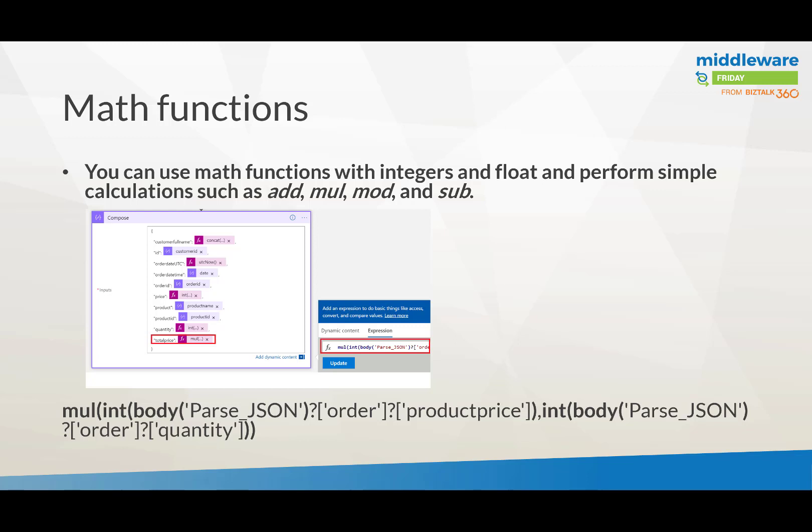Another thing you can do is a math function. In this scenario, you can multiply the product price and the quantity, and it will give you the total price. Since the XML message came in without a schema attached, it comes in as a complete string, so you have to convert the product price and the quantity to integers using conversion type functions.